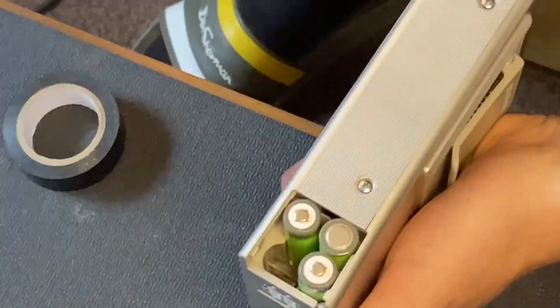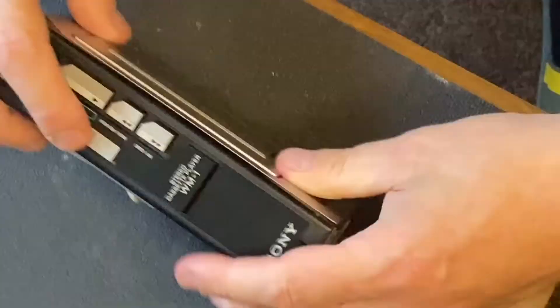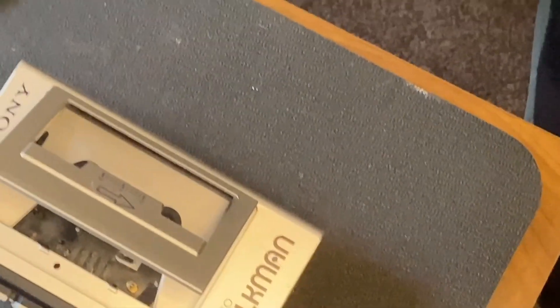Step 17: Test the Walkman. Finally, we're ready to test. Insert a tape and check all functions—play, fast forward, rewind, and the volume control.